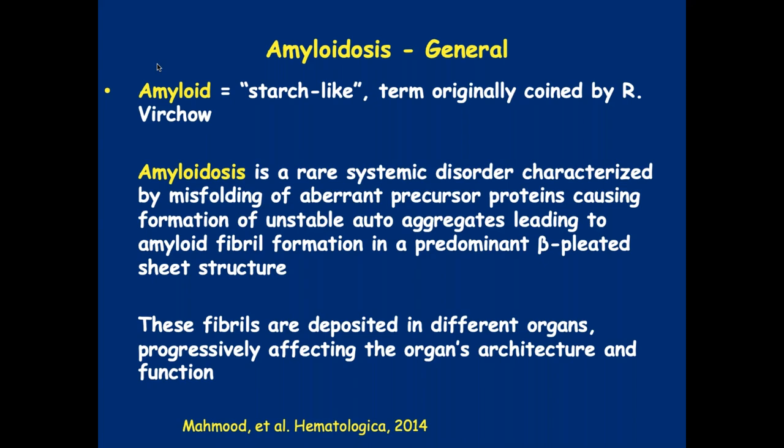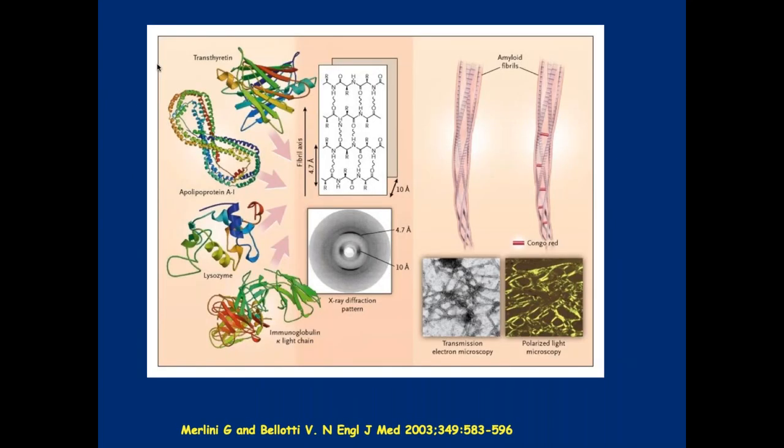This is a misfolding protein problem. When these proteins are misfolded, they have the ability to make some fibrils, and that's the way these fibrils get deposited into tissue. It's the monomers and then oligomers that make this protein, and the proteins travel from the blood — ones that are made in the bone marrow in the case of light chains — and from the blood they can literally go anywhere.